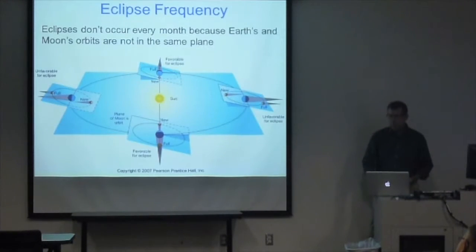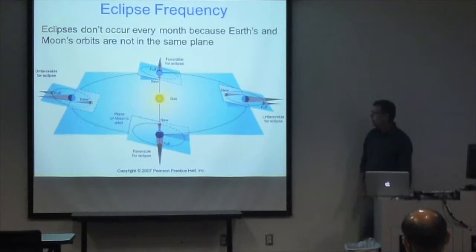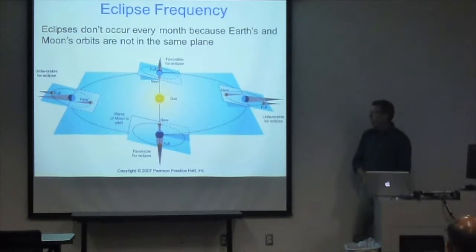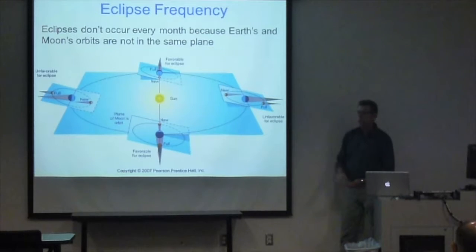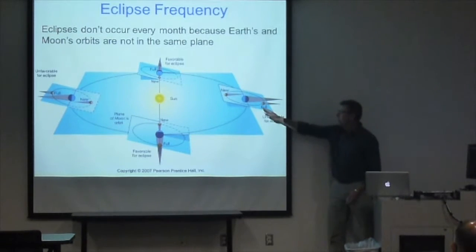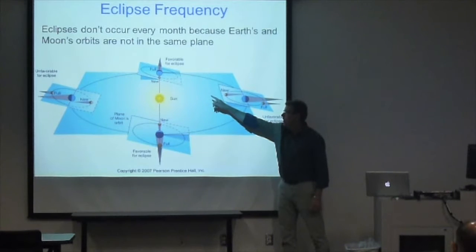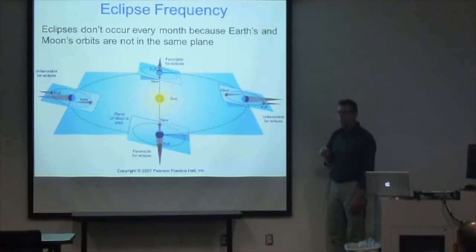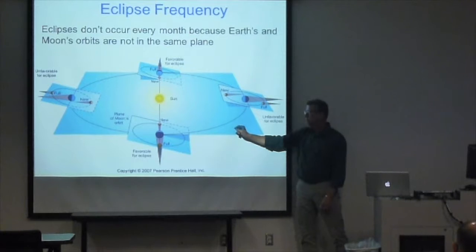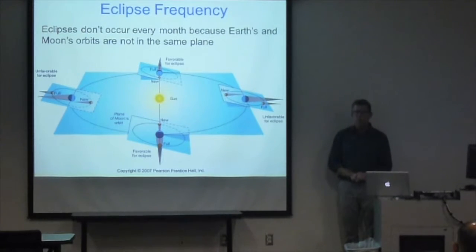Why don't eclipses happen more often if the moon goes near the sun every month? It's because the moon's orbit around the Earth is not in the same orbital plane as the Earth's around the sun—there's about a five-degree inclination. So most of the time, when you have a new moon (when you'd have a solar eclipse) or a full moon (when you'd have a lunar eclipse), it's not in the same plane and the shadows miss the Earth. However, twice a year the moon's orbit intersects the Earth's ecliptic plane at points called nodes, and that's when an eclipse is favorable. You also need a new moon for a solar eclipse or a full moon for a lunar eclipse during one of these nodes—that's why they're relatively rare.